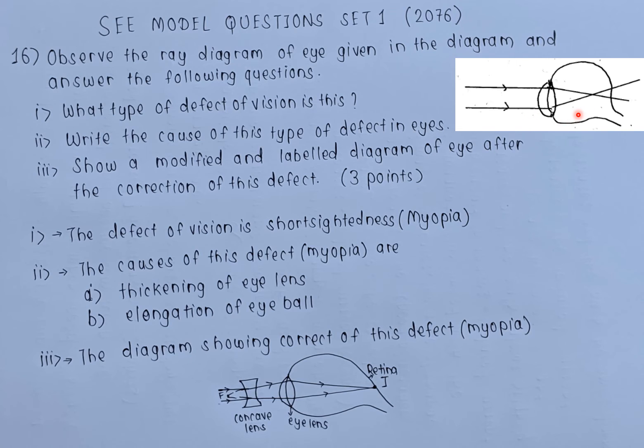So you have a concave lens. The parallel rays coming from far distance, they diverge just a little, and then you have the eye lens, that is a convex lens. It converges.